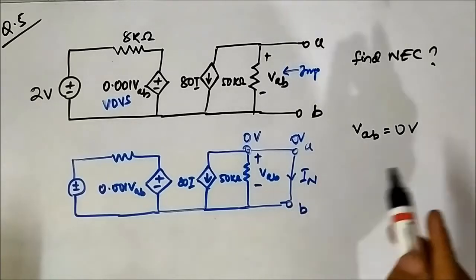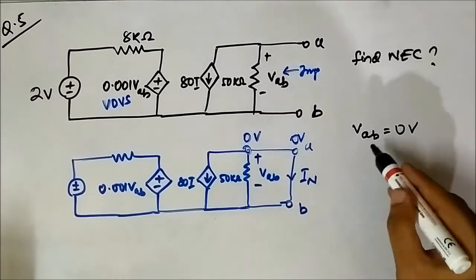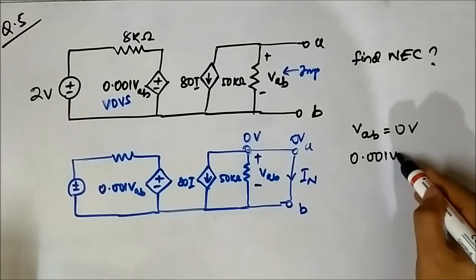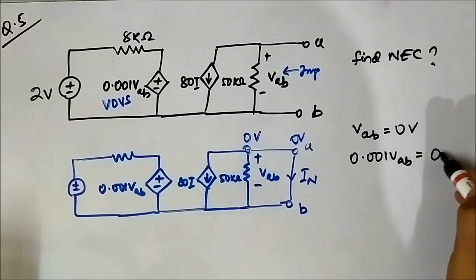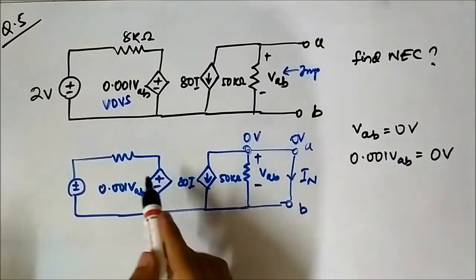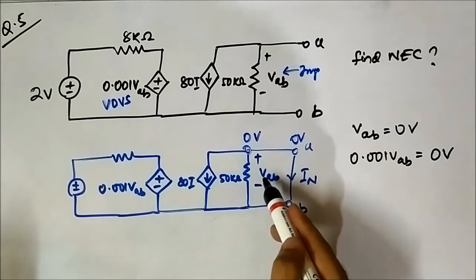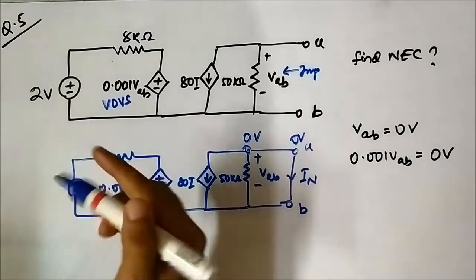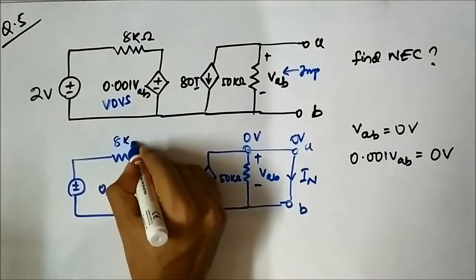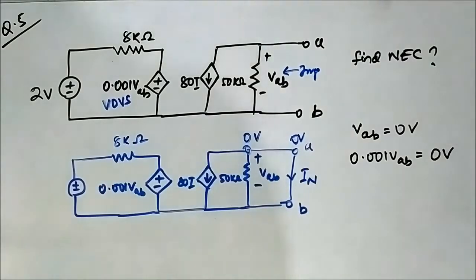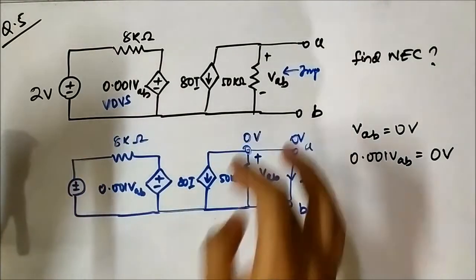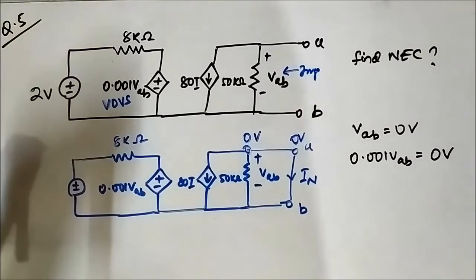When VAB becomes zero volt, 0.001 VAB also becomes zero volt. This becomes zero. When this becomes zero, the dependent source becomes zero because it is a voltage-dependent voltage source. Here it is zero volt and here it is zero volt.